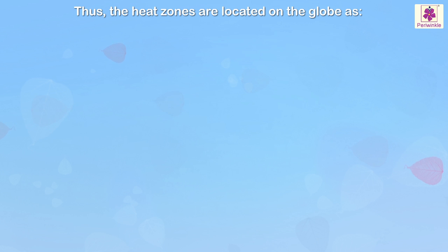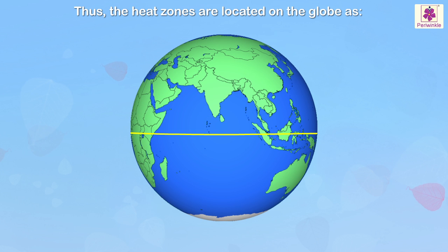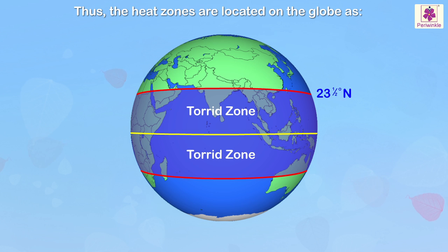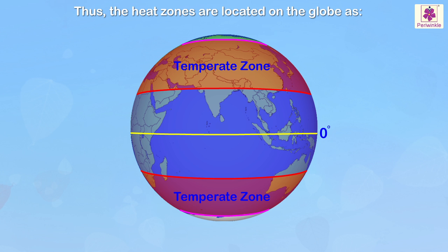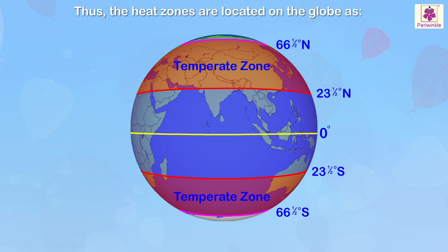The heat zones are located on the globe as follows: the torrid zone from 23.5° North to 0° to 23.5° South; the temperate zones from 23.5° North to 66.5° North, and 23.5° South to 66.5° South.